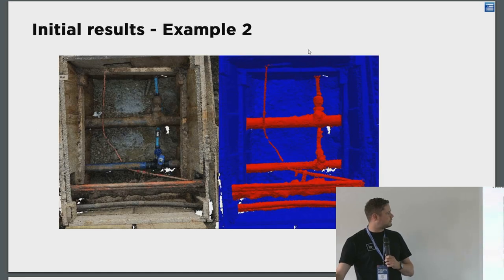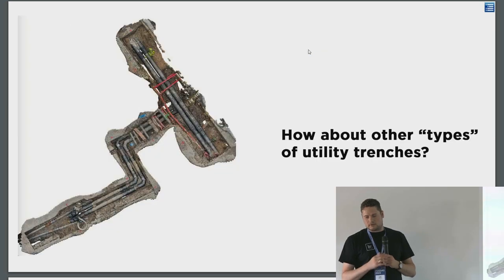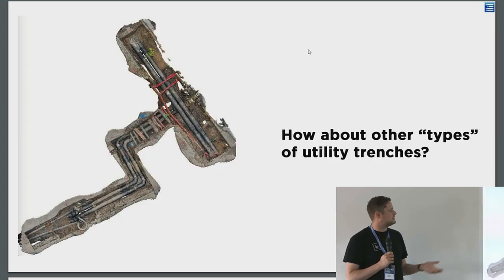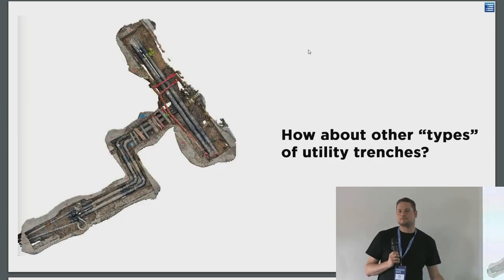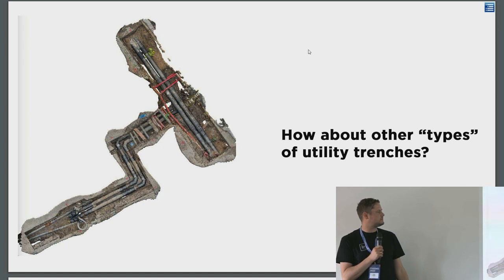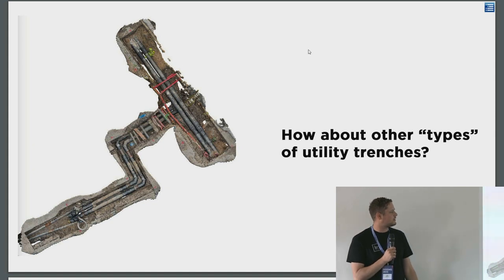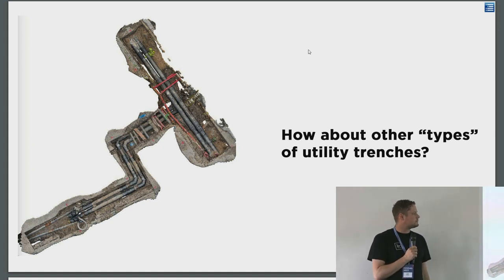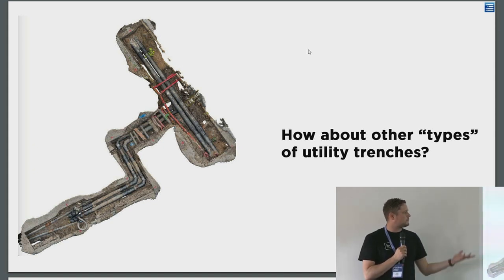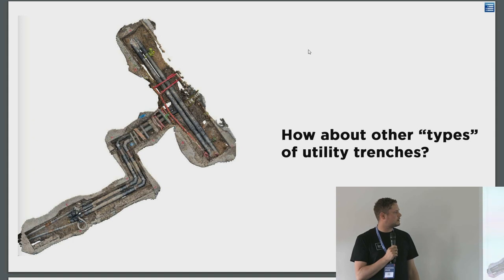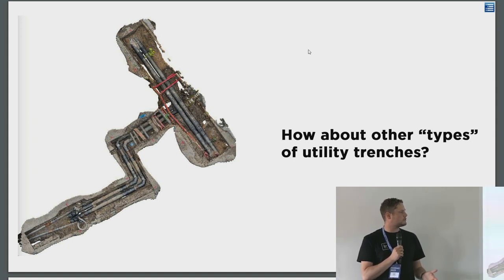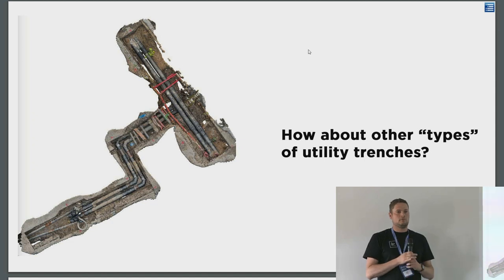Here's another example with satisfying results on a closer look. We also wondered what would happen if we tried the model on other types of utility trenches, because even though it's a trench, each type is quite distinctive — for example, a water utility trench versus district heating.